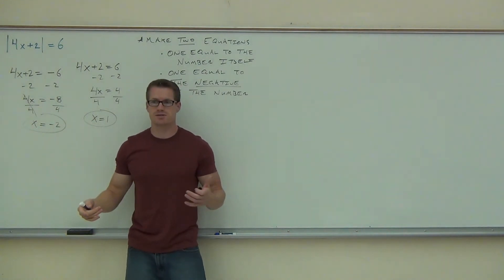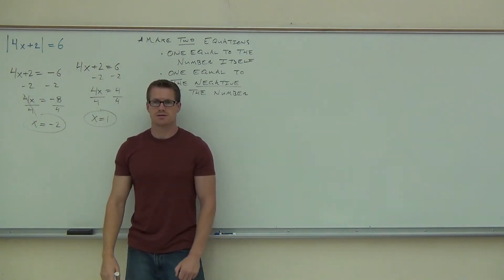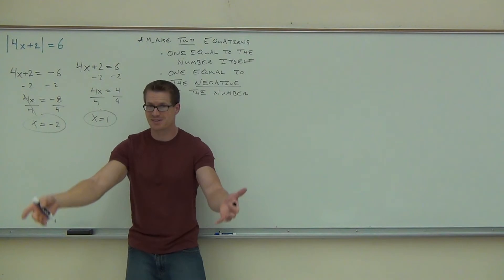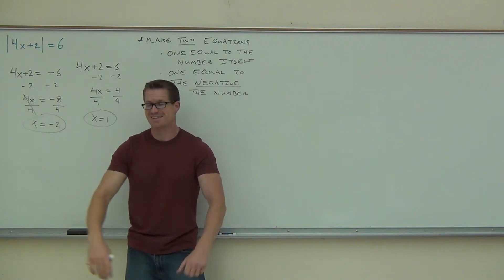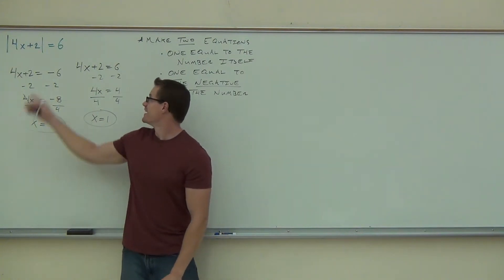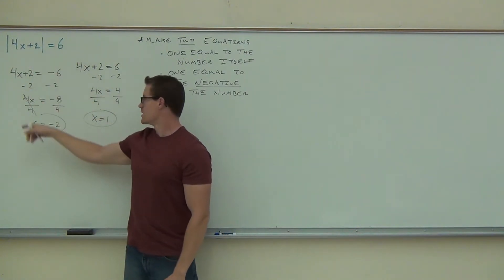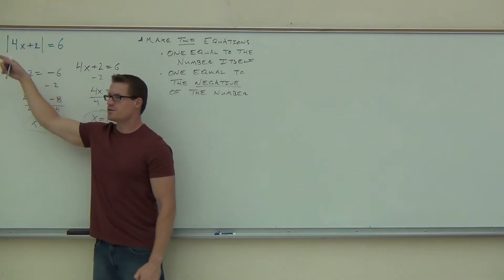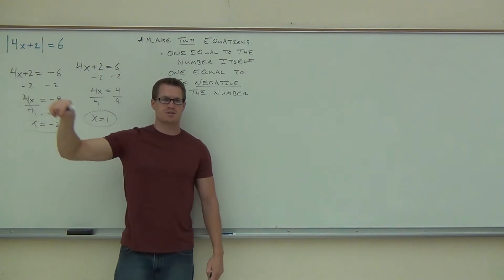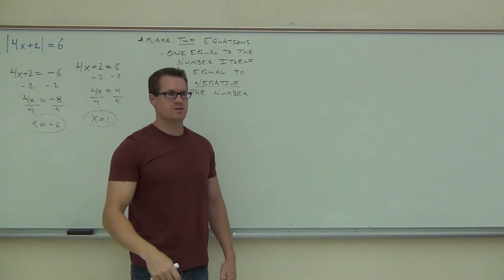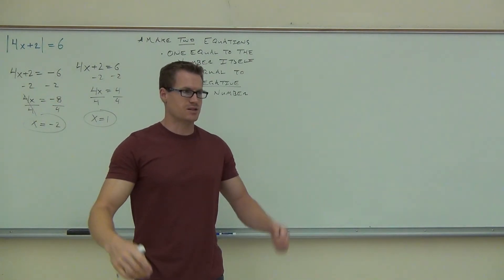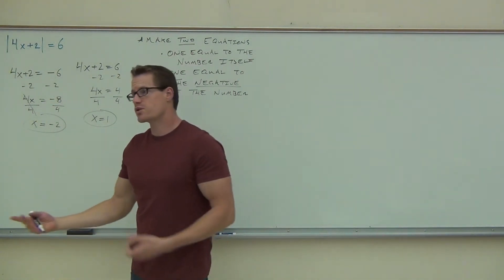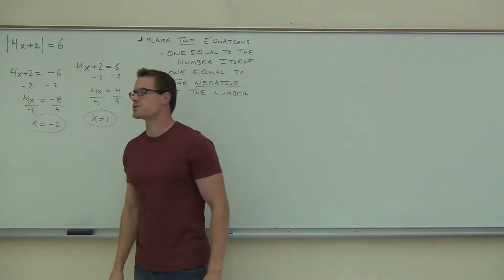The value of 6? That's where you come in — it is 6. Good, so that works. If we do negative 2, 4 times negative 2 is negative 8. Plus 2 is negative 6. So they both are solutions for us.